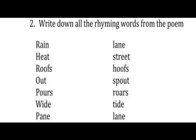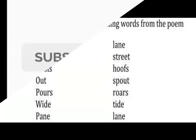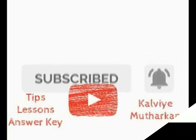The rhyming words from the poem are: rain and lane, heat and street, roofs and hoofs, out and spout, pores and rows, wide and tide, pan and lawn.